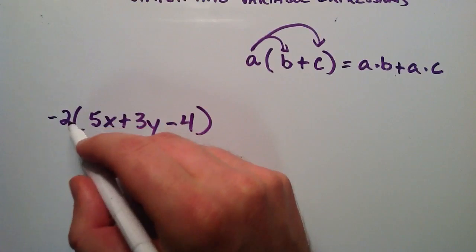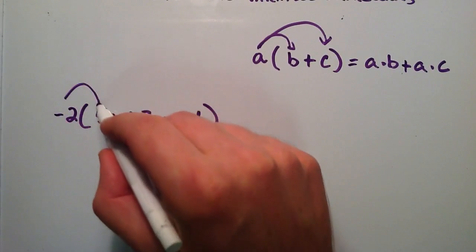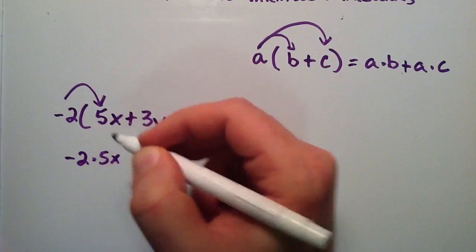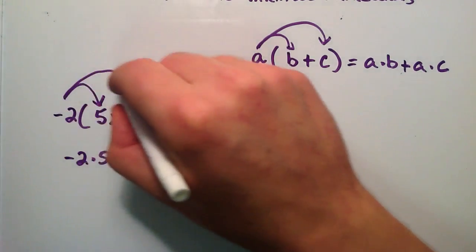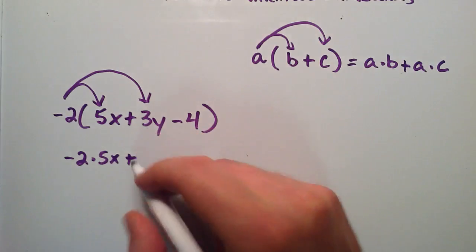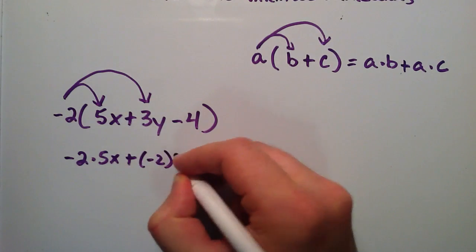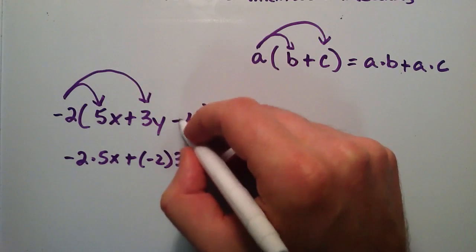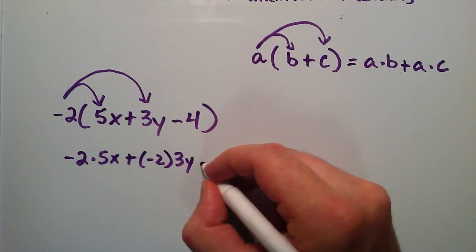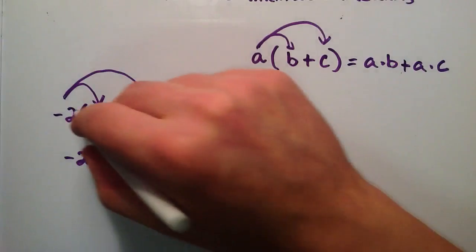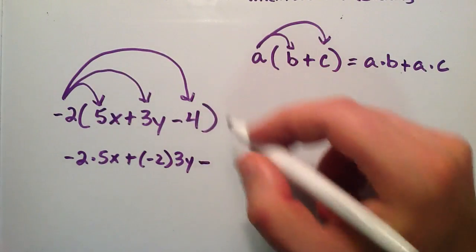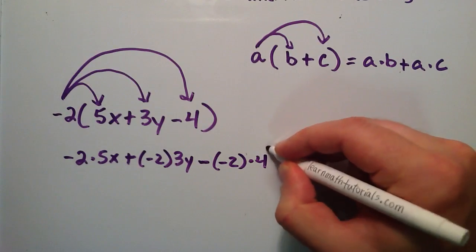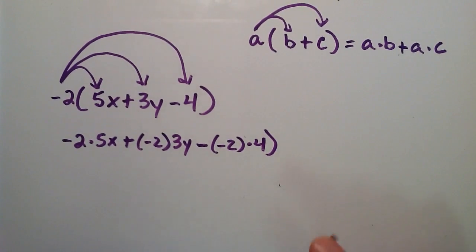And so we're simply going to distribute this negative 2 into the first term. So this becomes negative 2 times 5X plus negative 2 times 3Y. So this is negative 2 times 3Y minus, so it doesn't actually have to be a plus like we have here. This time we're just going to go ahead and write the minus down. And then we do a negative 2 times 4. So this is negative 2 times 4.